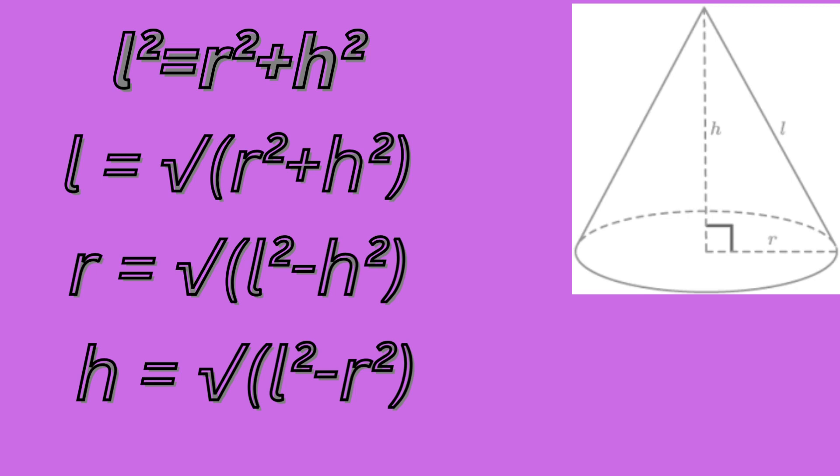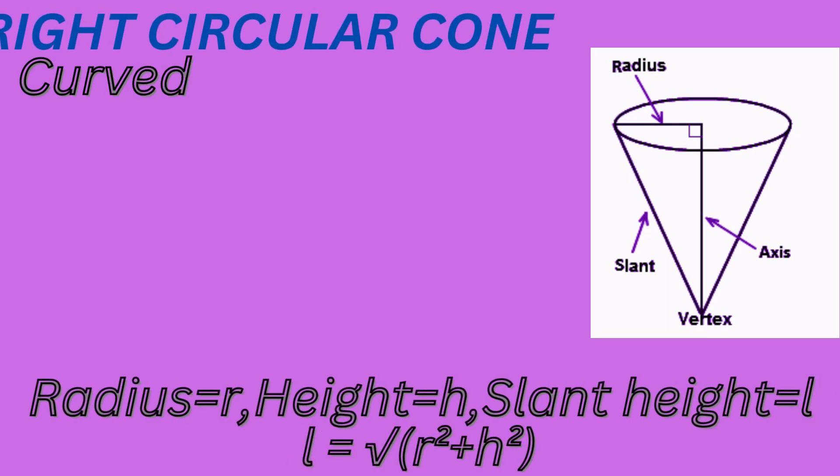This can also be written in different ways like R square equals to L square minus H square, that is R equals to root over of L square minus H square, and H square equals to L square minus R square, that is H equals to root over of L square minus R square.